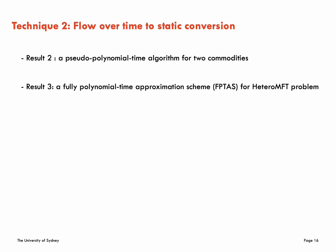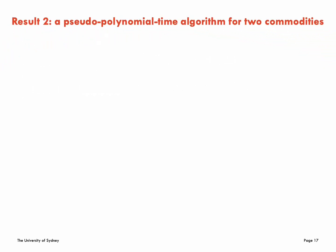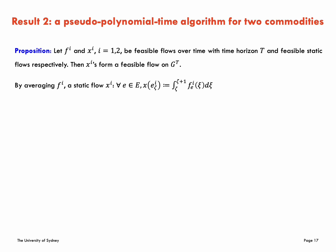One is pseudo-polynomial time algorithm for two commodities. By averaging f over time, we can prove that in the case of two commodities when feasible flow over time, if they meet, it means that the maximum value has already been met and the capacity has not been violated. So the sum value after averaging does not exceed the capacity either. Therefore, the sum of the flow values at the end of the edge is guaranteed not to exceed the capacity, and then it will not be exceeded on the whole edge.